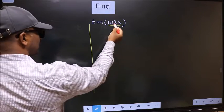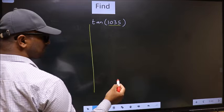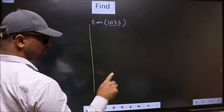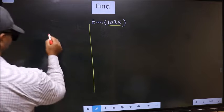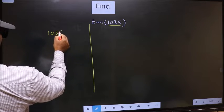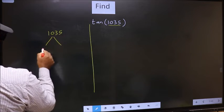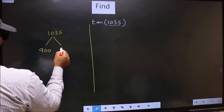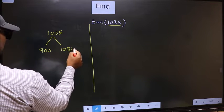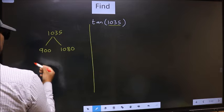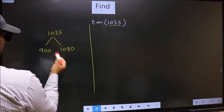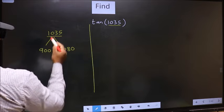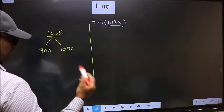Now we should check 1035 lies between which two multiples of 180. What I mean is, 1035 lies between 900 and 1080. This is 180 into 5 and this is 180 into 6. Between these two numbers, 1035 lies. Next,